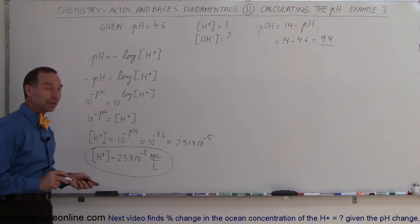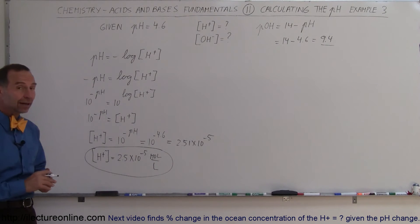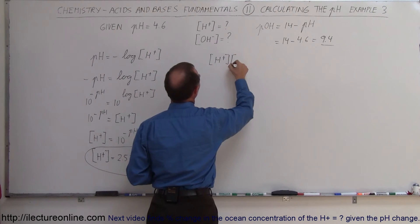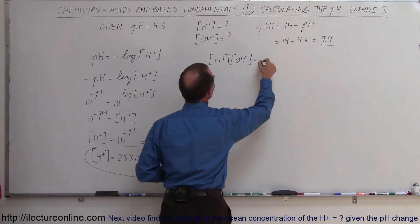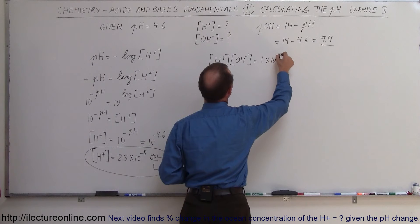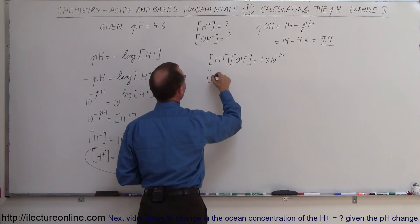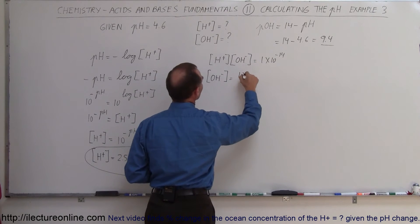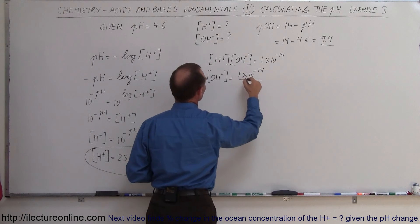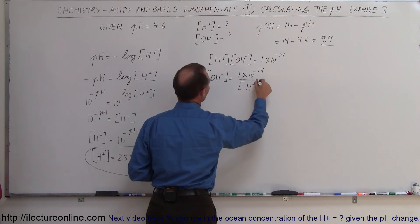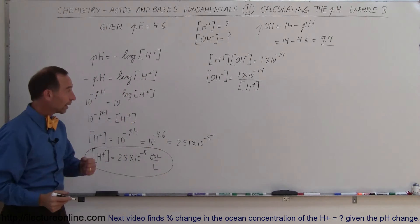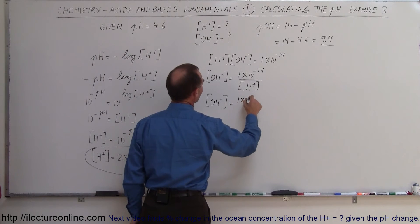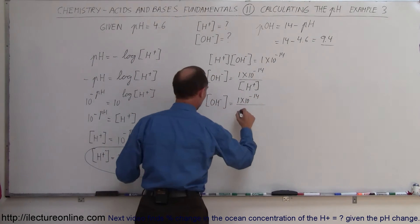To find the concentration of the hydroxide ion, we use the relationship [H⁺] × [OH⁻] = 1 × 10⁻¹⁴. Therefore, [OH⁻] = 1.0 × 10⁻¹⁴ divided by [H⁺]. Since we just found [H⁺], we plug that number in: [OH⁻] = 1 × 10⁻¹⁴ divided by 2.51 × 10⁻⁵.